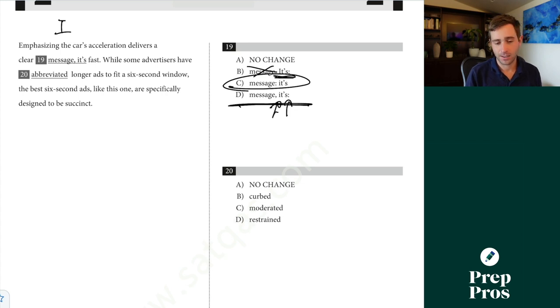While some advertisers have blank longer ads to fit a six-second window, the best six-second ads like this one are specifically designed to be succinct. Curved, moderated, restrained, don't make sense. Abbreviate is just to shorten. So we're just saying while some advertisers have shortened longer ads to fit a six-second window, then we're following on with the same idea there.